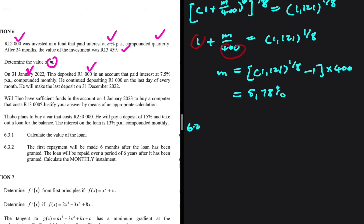Now let's do 6.2. On January 31st, somebody deposited 1,000 in an account that paid interest at 7.5% per annum compounded monthly. They continued depositing 1,000 on the last day of every month, making the last deposit on 31st December 2022.